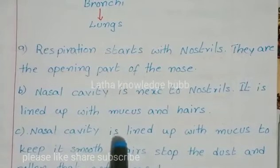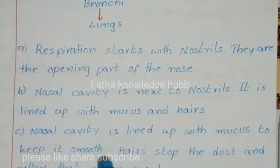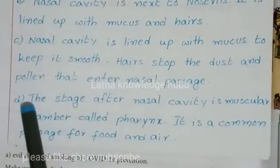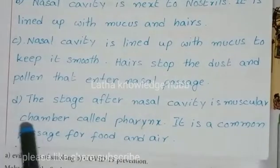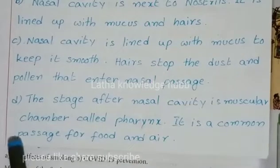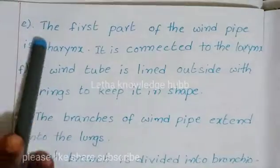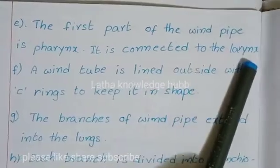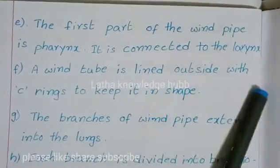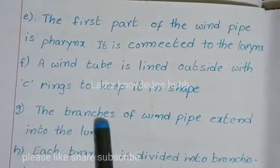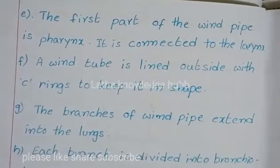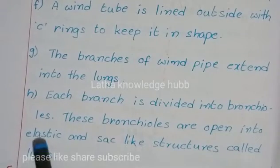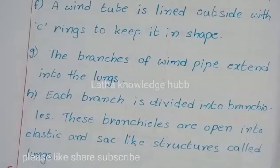The nasal cavity is lined with mucus; hairs stop dust and pollen entering the nasal passage. After the nasal cavity is a muscular chamber called the Pharynx, a common passage for food and air. The windpipe is connected to the pharynx and is lined outside with C-shaped rings to keep it in shape. Branches of the windpipe extend into the lungs and divide into bronchioles, which open into elastic sac-like structures called alveoli.